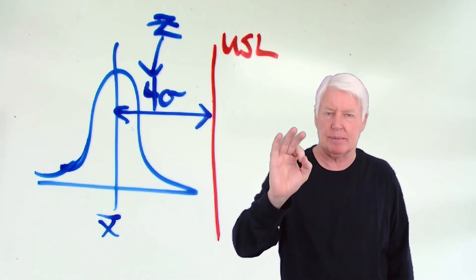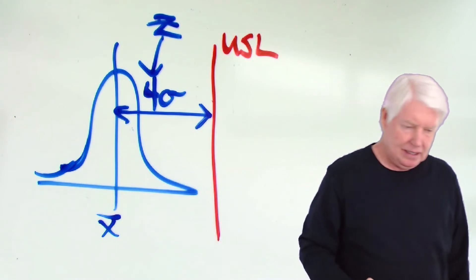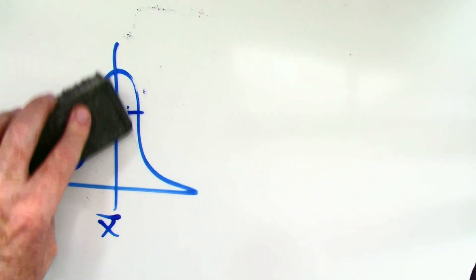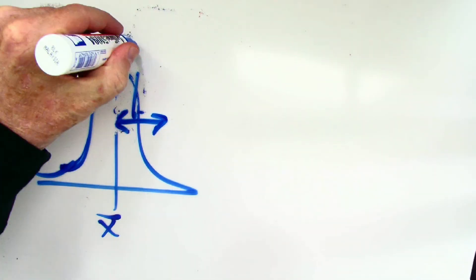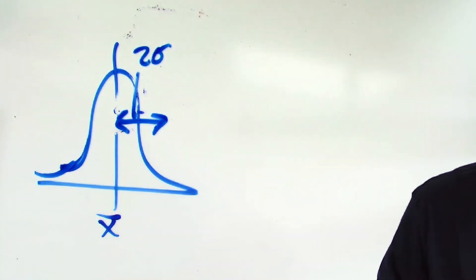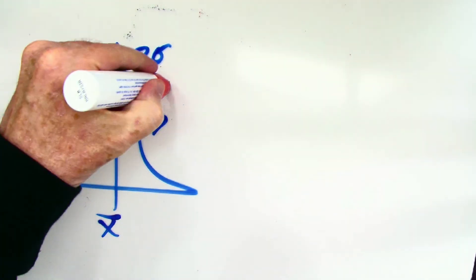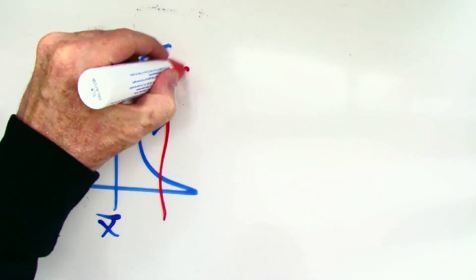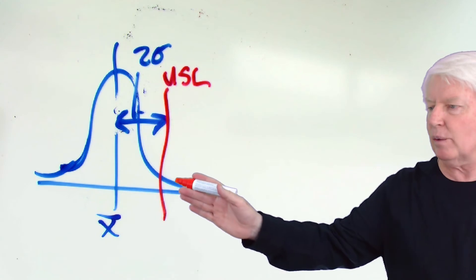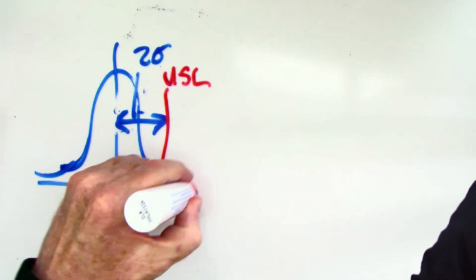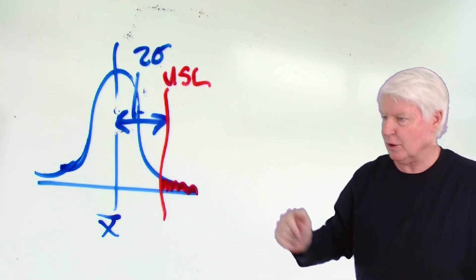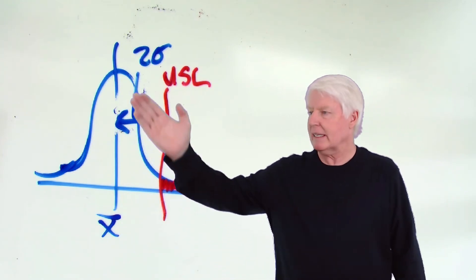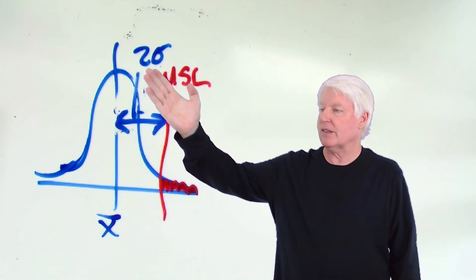Now that you understand that, I can explain what the z statistic is. That number there, four, is the z statistic. So if you looked at this picture and said, what's z upper? Z upper, meaning the distance above the average, to the upper spec limit there. Z is four sigmas. How many sigmas? Four. That is z. Z is the number of sigmas. The number of standard deviations is z.